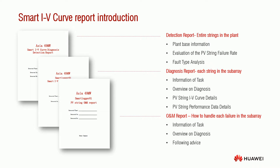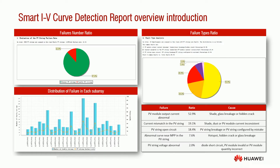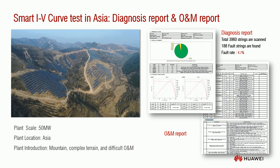There are four output documents after diagnosis: the detection report, the diagnosis report, the OEM report, and the original data in an Excel sheet. The detection report consists of plant-based information, evaluation of the PV string failure rate, and fault type analysis. For example, more than 15% of faults may be PV module output current abnormal, which might be caused by shade or glass breakage, and almost 20% may be contributed by current mismatch in the PV string, which might be due to shade, dust, or soiling on the PV module.